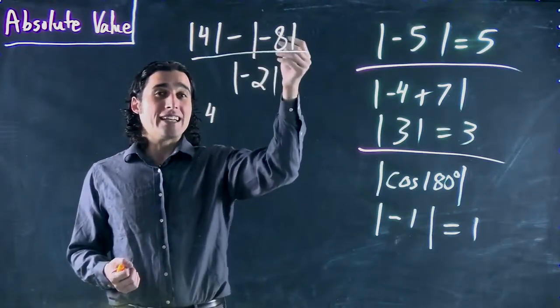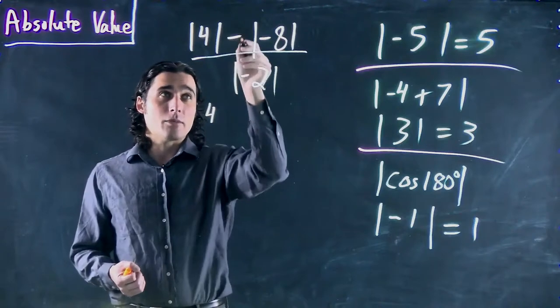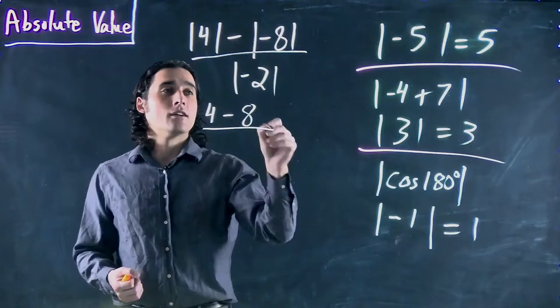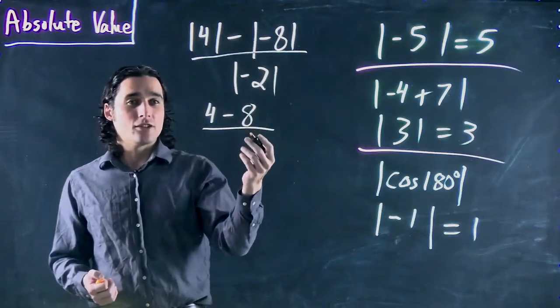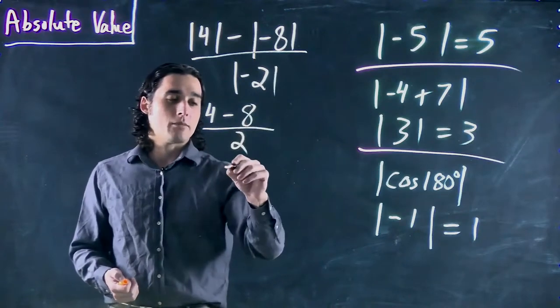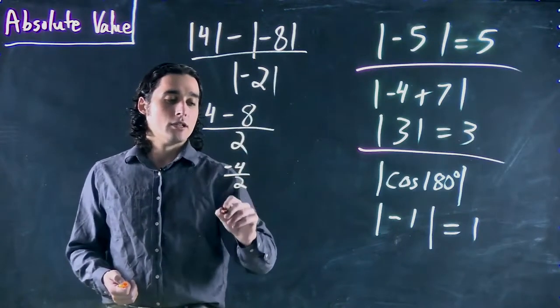Absolute value of minus 8 is 8. We still have the minus in between, because that's not within any absolute value bars. So we have 4 minus 8, all over the absolute value of minus 2, which is simply 2. So, 4 minus 8,